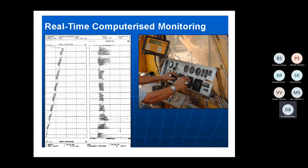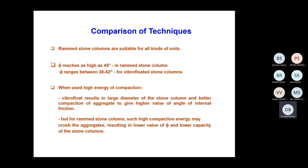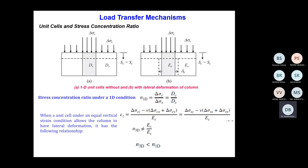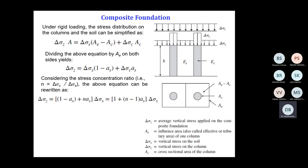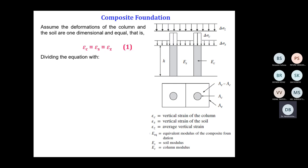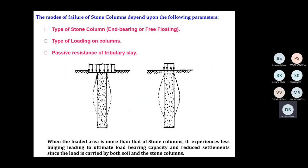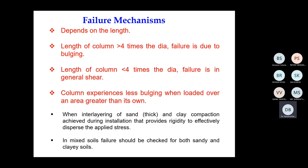Real-time monitoring is used to ensure that the aggregates are compacted to the desired degree. If you don't monitor the degree of compaction, you might not accomplish the desired requirement in terms of stability or bearing capacity. We have previously discussed the load transfer mechanism and derived some equations. Now let us discuss the failure modes.